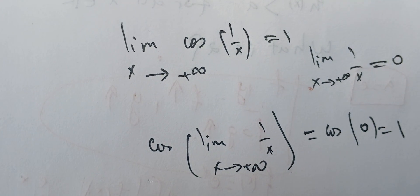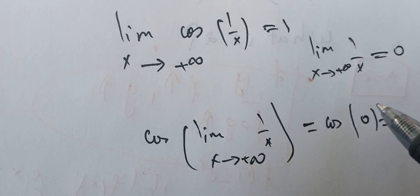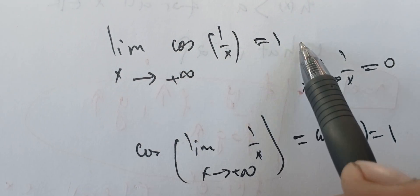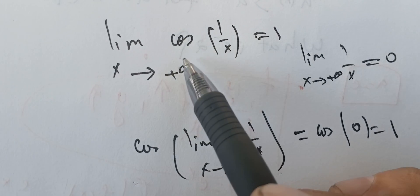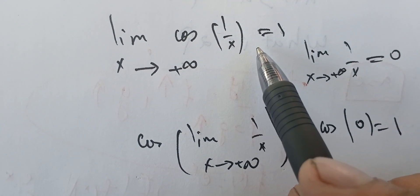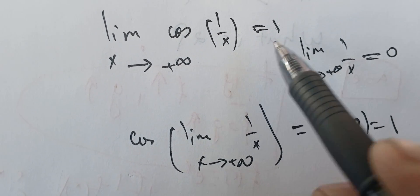that are useful so we can use them as we did here. Therefore, this limit exists. Try to use the definition of the limit at infinity to show that this one exists—good luck with that! Thank you very much.